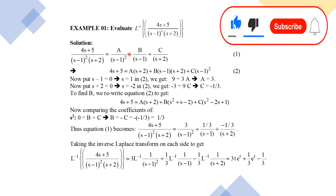After multiplying both sides by (s − 1)²(s + 2), we get the expanded equation. To find A, we apply the method of substituting s − 1 = 0, so s = 1. Putting s = 1 into the equation: 4(1) + 5 = 9, and the B and C terms vanish. So A × (1 + 2) = 3A = 9, giving A = 3.